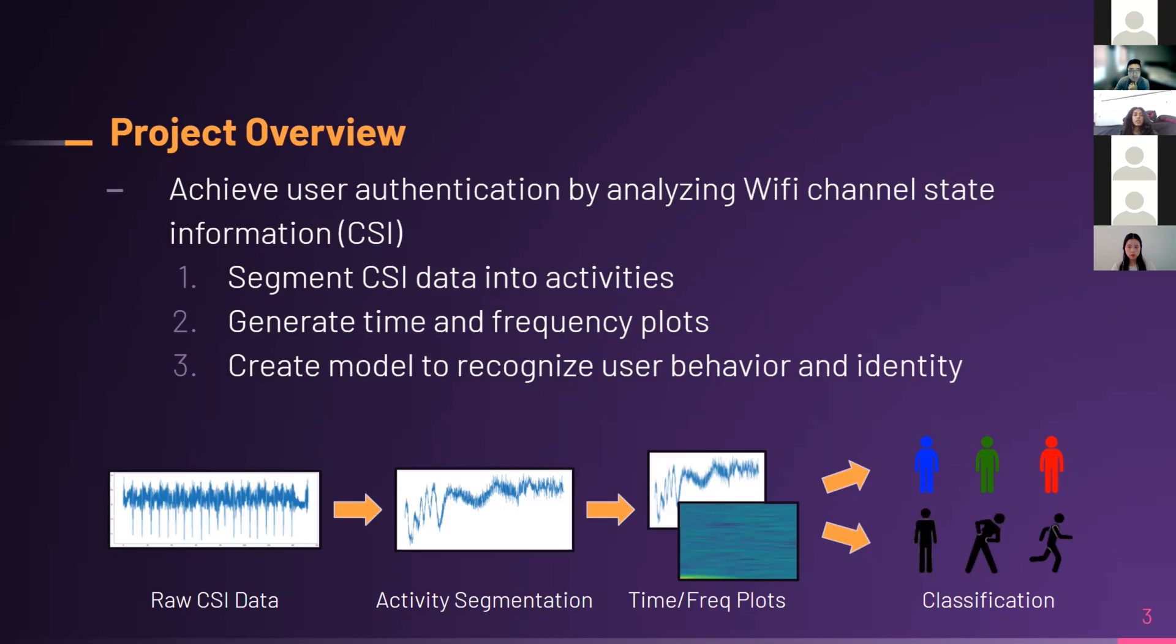Since we were unable to meet in person and collect data, we used the data that the lab had previously gathered. With that, there are three basic goals that we had to meet. The first was to segment the CSI data into activities. The activities may include walking, squatting, or just standing or running around.